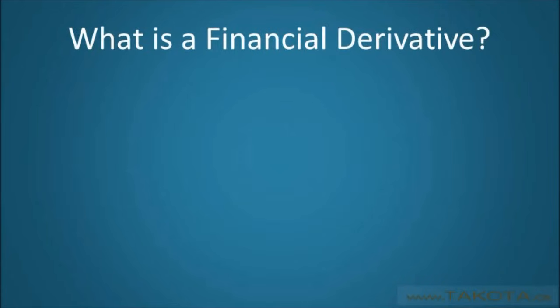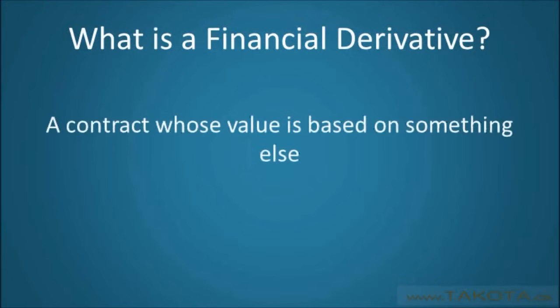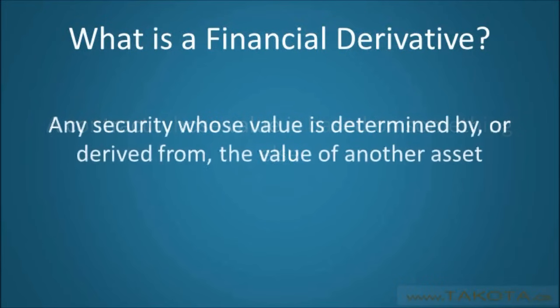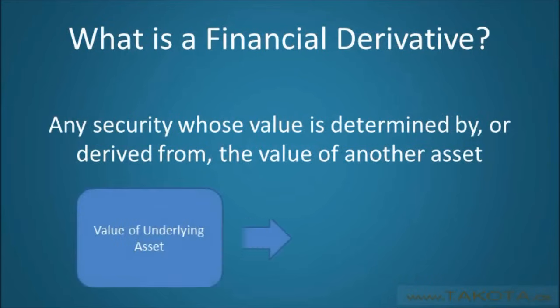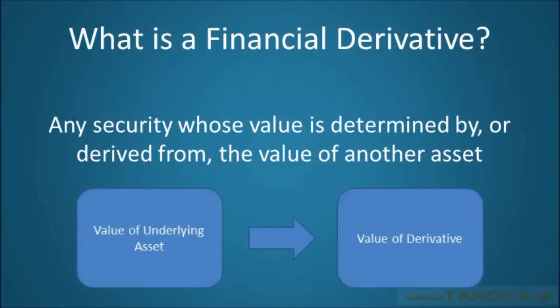So what exactly is a financial derivative? Well, in its most general sense, a derivative is a contract whose value is based on something else. But more specifically, the term financial derivative refers to any security whose value is determined by or derived from the value of another asset. The asset from which a derivative gets its value is known as the underlying asset, or simply underlying.